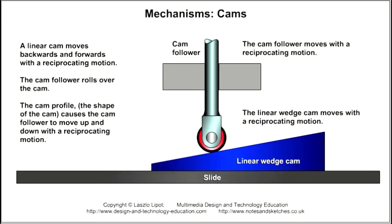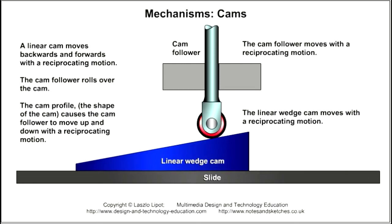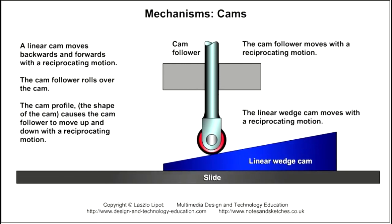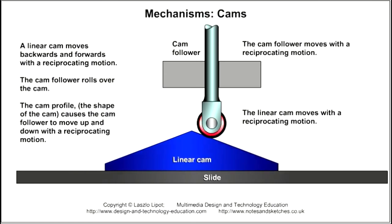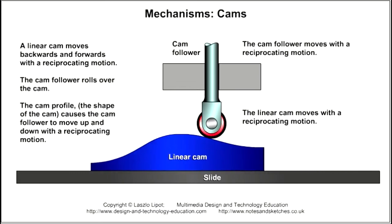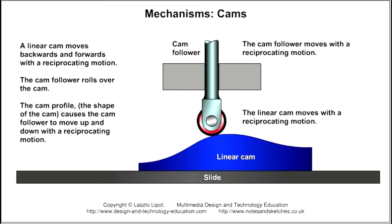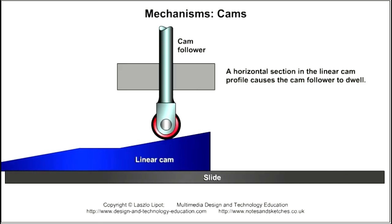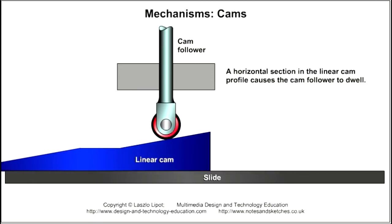A linear cam moves backwards and forwards on a slide and creates a reciprocating motion in the cam follower. The shape of the cam determines how the cam follower moves. A horizontal section in the linear cam profile causes the cam follower to stay still, or dwell.